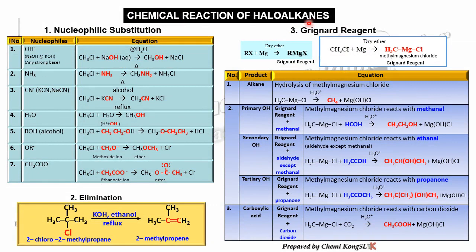To summarize the chemical reactions of haloalkane: there are three. First, nucleophilic substitution — seven types of nucleophiles. Second, elimination to form alkene: the reagent is potassium hydroxide or sodium hydroxide in alcoholic solution under reflux, forming a carbon-carbon double bond. Third, Grignard reagent — a very useful compound.